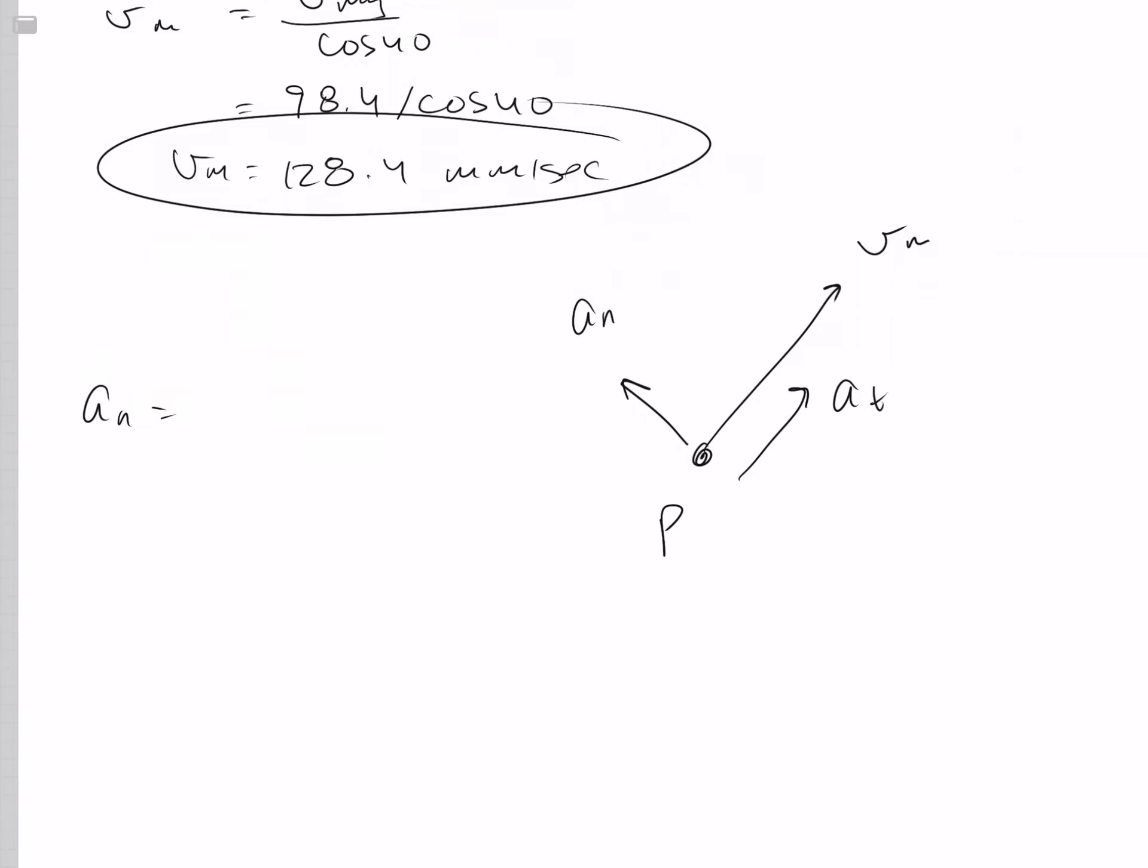Alright, so AN equals V middle squared over rho, which is the 250. So 128.4 squared over 250. That is AN equals 66.0 millimeters per second squared.